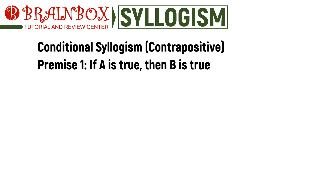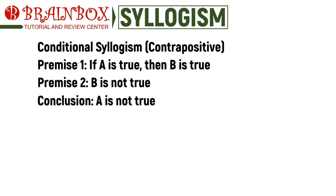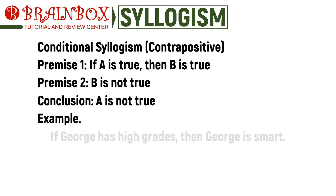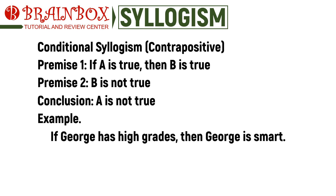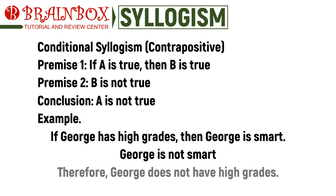The contrapositive form follows the pattern: 'If A is true, then B is true; B is not true, therefore A is not true.' Example: 'If George has high grades, then George is smart; George is not smart, therefore George does not have high grades.' It's very similar to the basic form, except this time we're dealing with the negative, making use of B to confirm that A is not true.